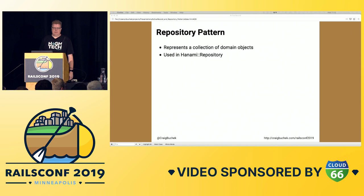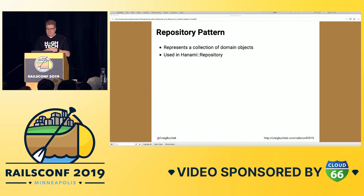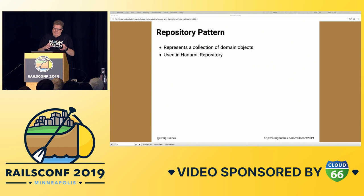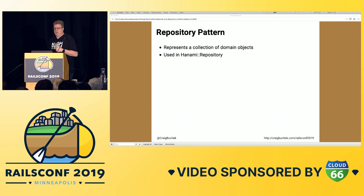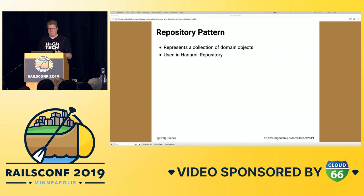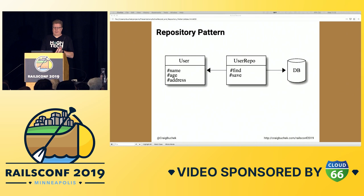Hanami model implements the repository pattern, which represents a collection of domain objects — in many ways we can treat the database as an in-memory collection. We do have something similar in ActiveRecord: the class methods — create, where, find, all. When you create a scope, that's also sort of the repository pattern. But it's stuck in class methods, and those have serious limitations: they lead to procedural code instead of object-oriented code, often indicate you've missed an abstraction, limit your polymorphism, and are hard to test and hard to refactor. There's a good article on Code Climate that talks about all those problems.